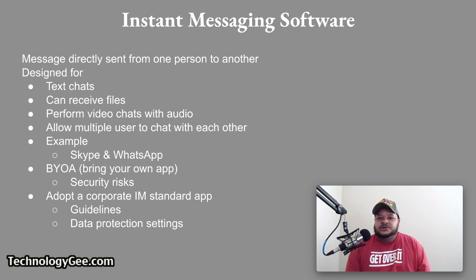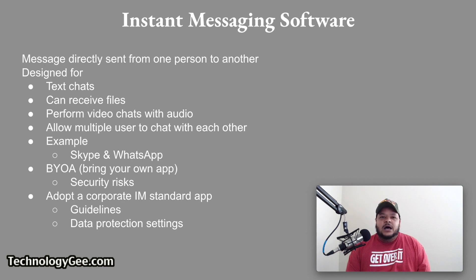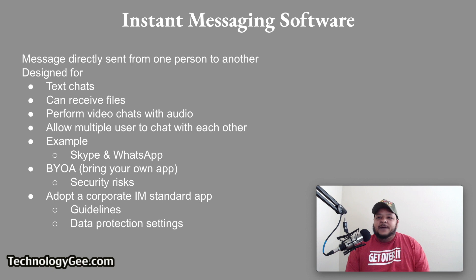Instant messaging, also known as IM, is a message directly sent from one person to another. IM software was designed for text chats originally but can receive files, perform video chats with audio, and allow multiple users to chat with each other at the same time. Examples are Skype and WhatsApp. Organizations that allow users to bring your own app (BYOA) for instant messaging can be exposed to security risks if unauthorized data or information is transmitted. Adopting a corporate IM standard app combined with guidelines and data protection settings can help avoid IM problems.